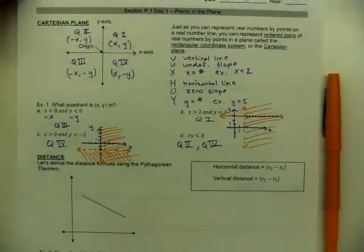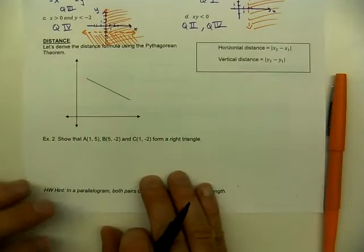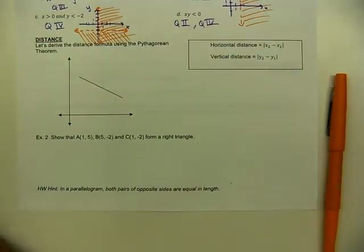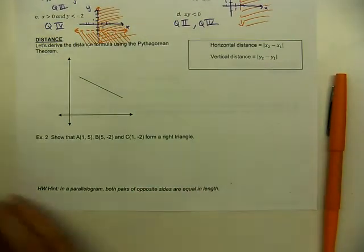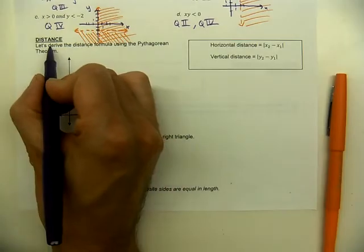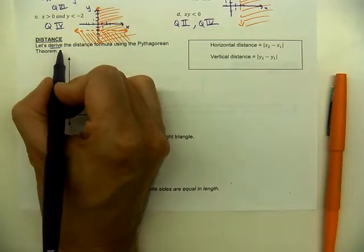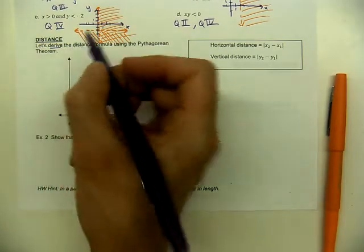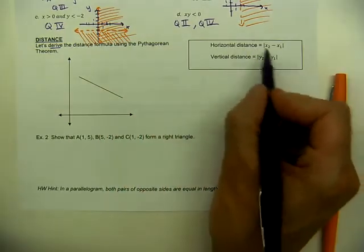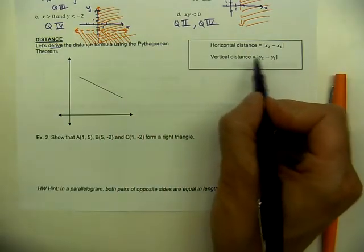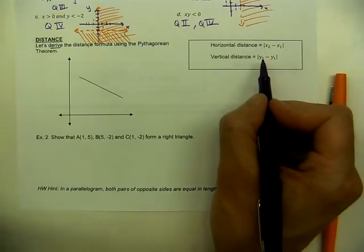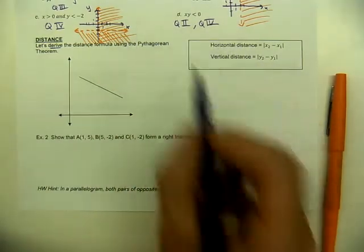That's topic one. Now for topic two, we're going to use the distance formula in a few different ways, starting by deriving it — explaining the connection between the Pythagorean theorem and how we calculate horizontal and vertical distance.